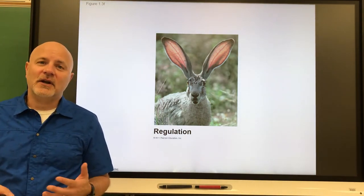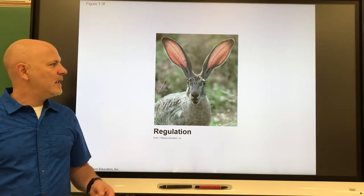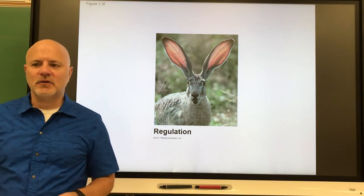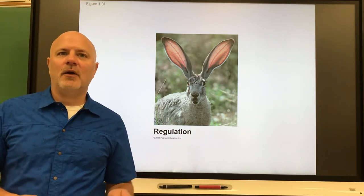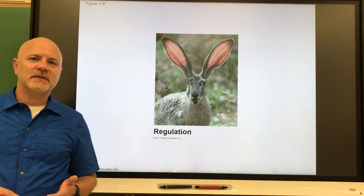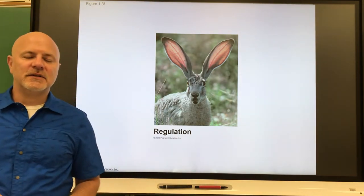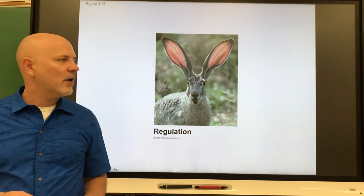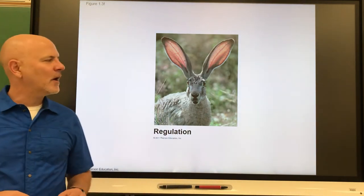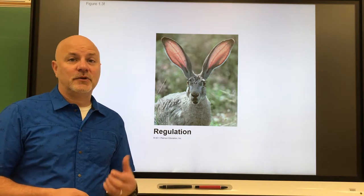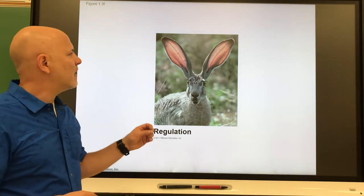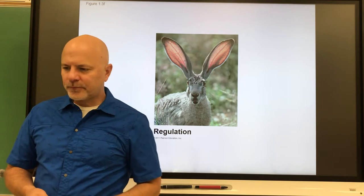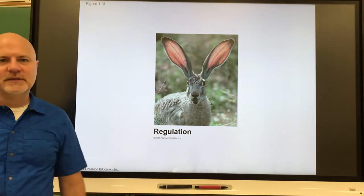Life is also self-regulated. Organisms undergo processes that allow them to stay alive, known as homeostasis — the maintenance of internal conditions within certain boundaries. For example, our body temperature is 98.6°F or 37°C. The jackrabbit maintains its homeostasis by living in a warm environment and pushing blood out to its ears to help cool its body down, similar to how we would sweat.